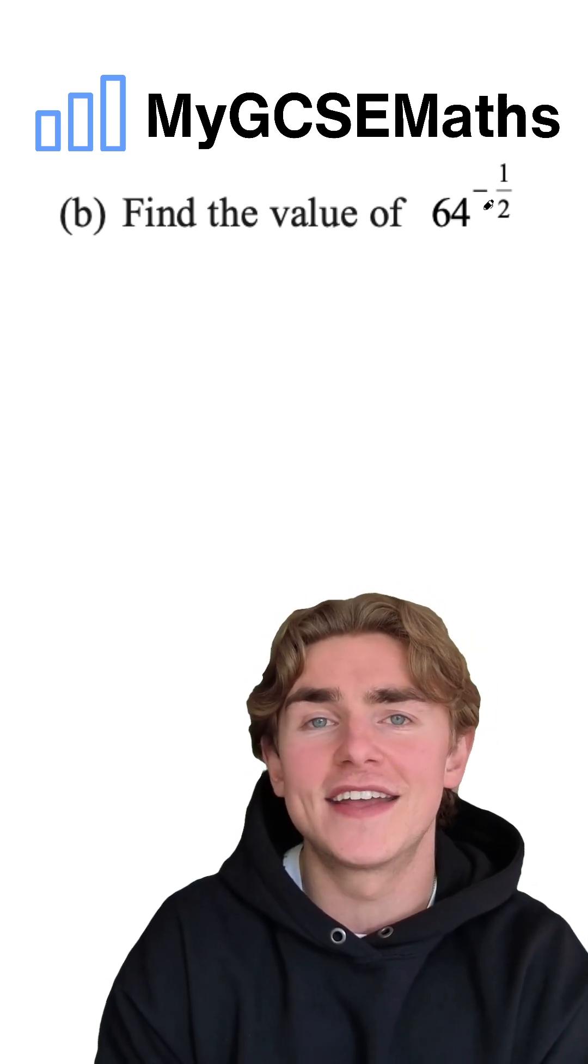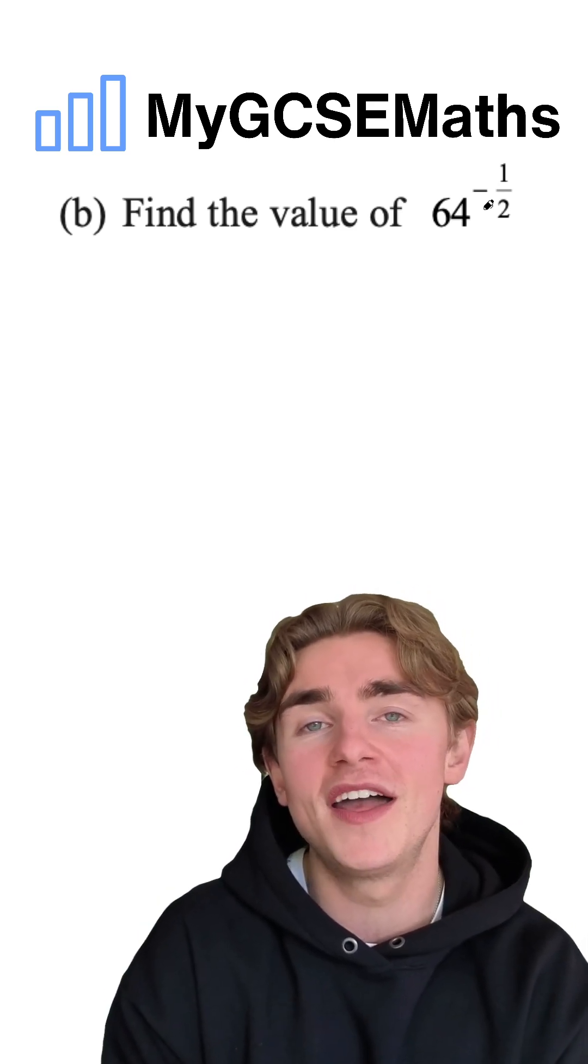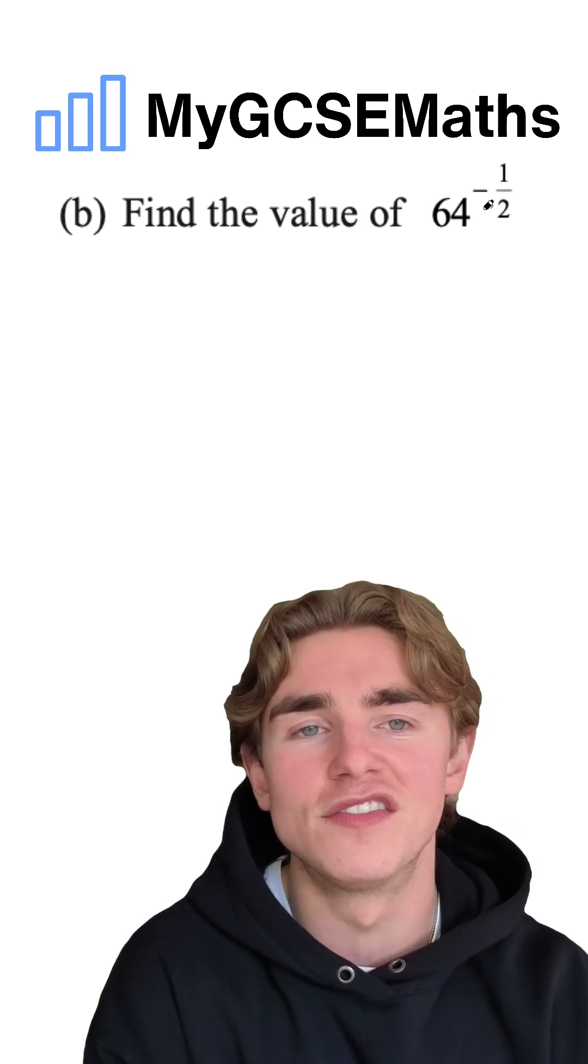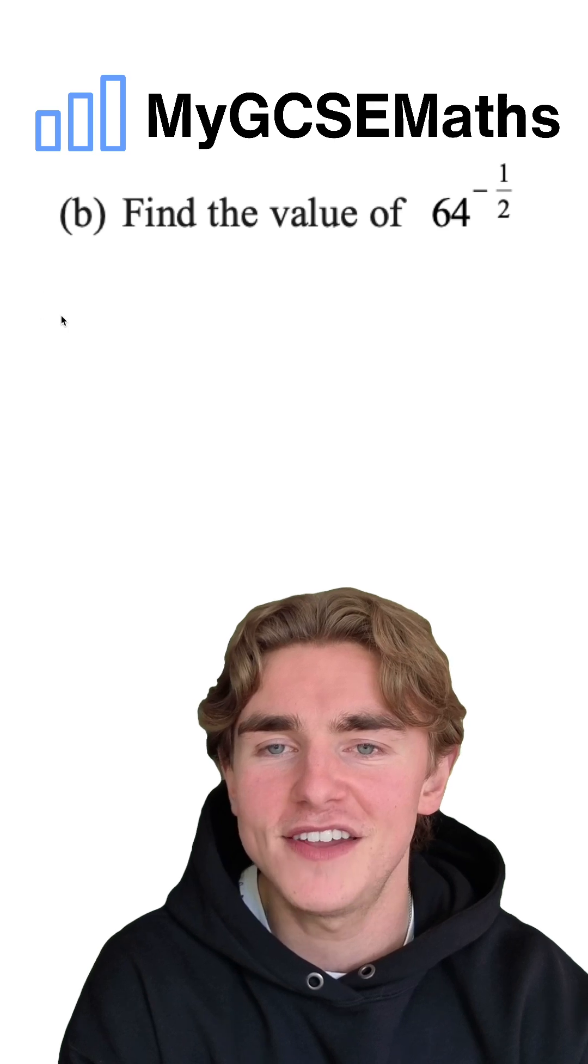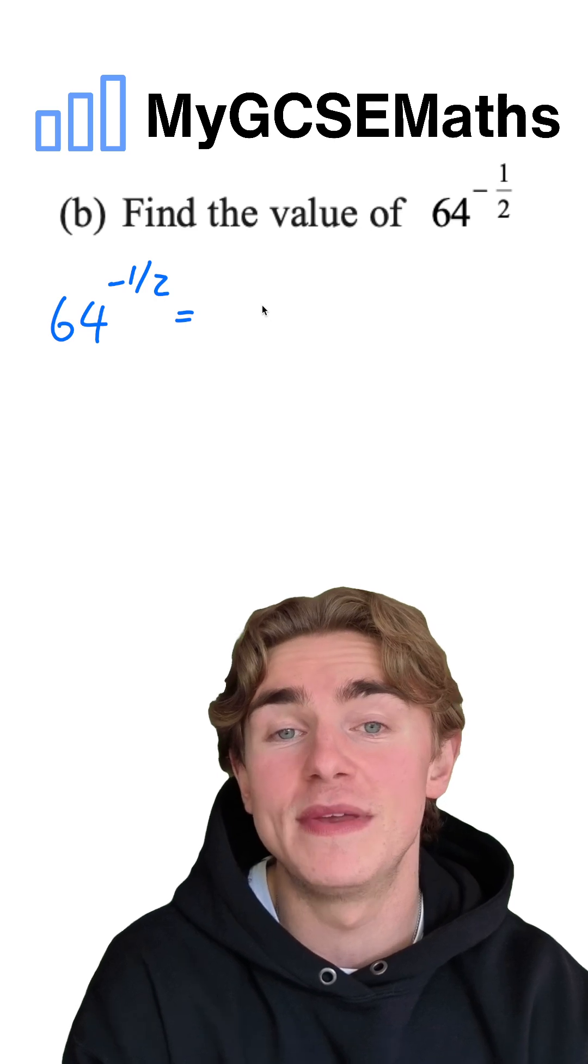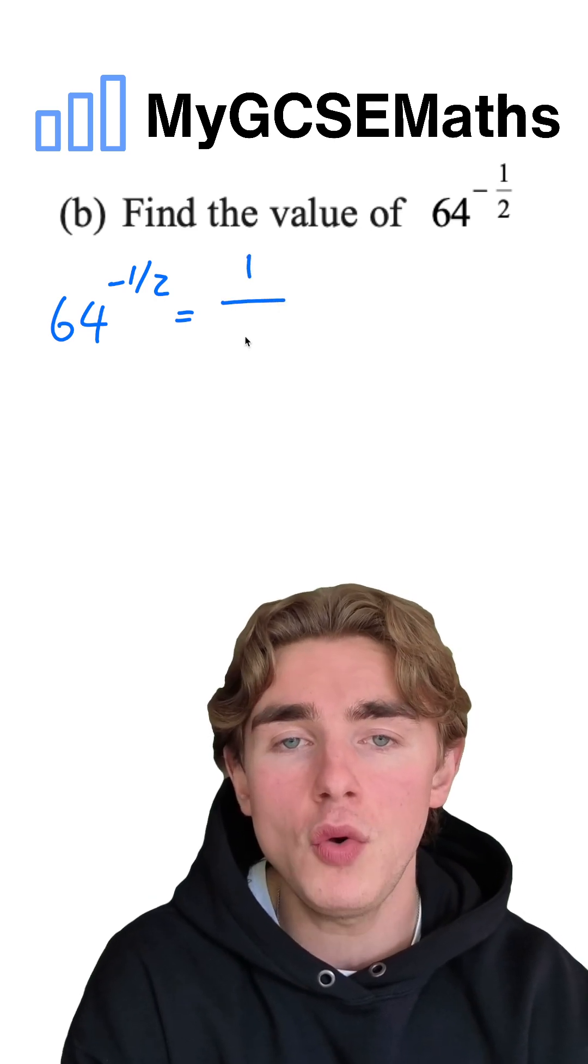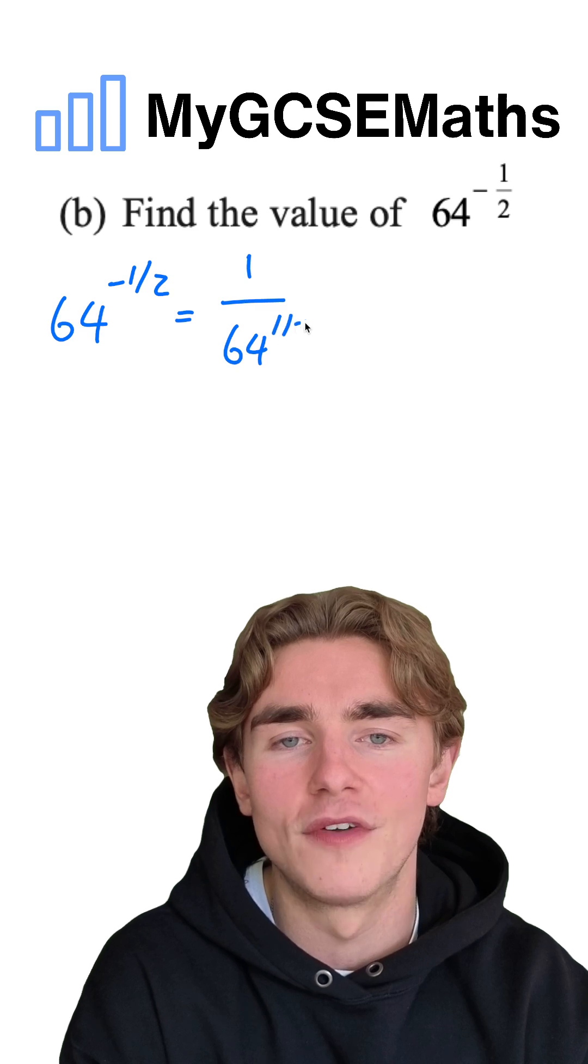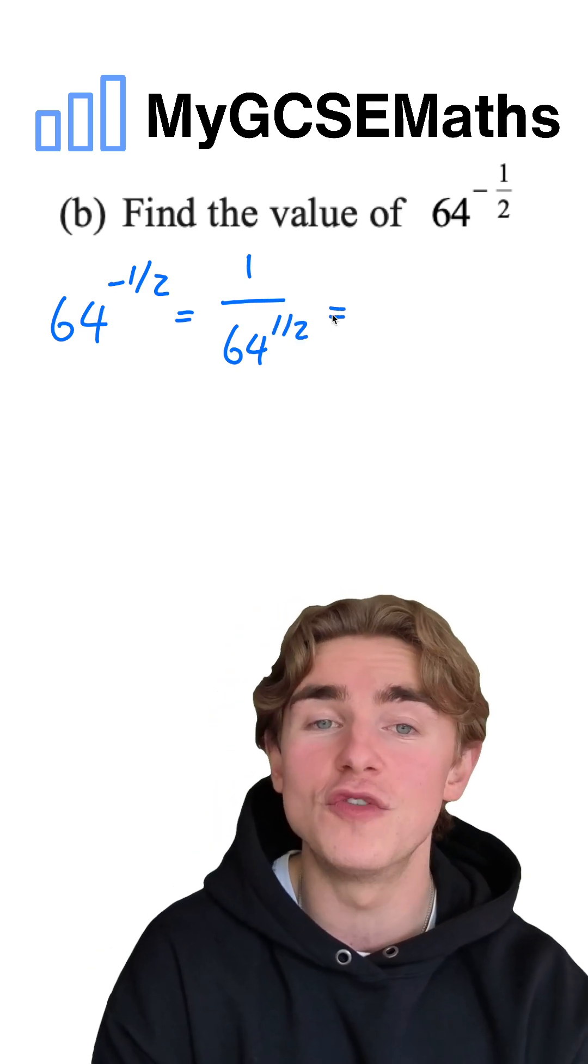What do we do with a negative power? A negative power makes it one over whatever it otherwise would have been. So here we have 64 to the power of negative a half. This is going to be the same thing as one over 64 to the power of a half. So the negative made it one over.